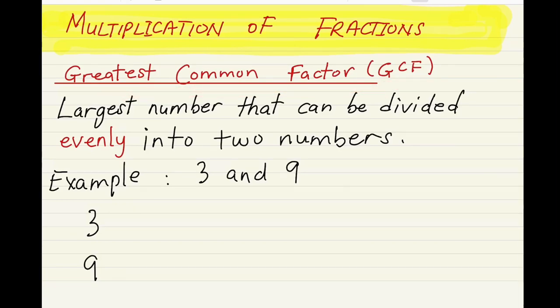The GCF is the largest number that can be divided evenly into two numbers. For example, if you have a fraction like 3 over 9 and you're asked to reduce it to the lowest term, you find the factors of both numbers, 3 and 9.